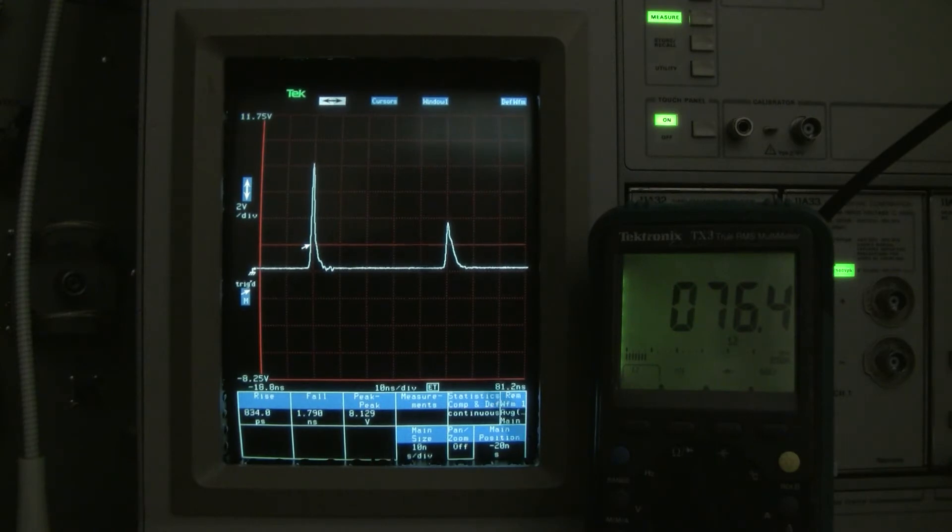So there we go, 76 ohms, 76.4 ohms. So we know that this is a chunk of 75 ohm coax.